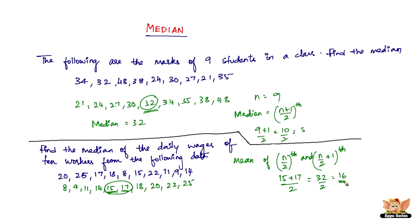So therefore 16 is the median of this given data. Rupees 16 is the median wage of the workers from the following data.